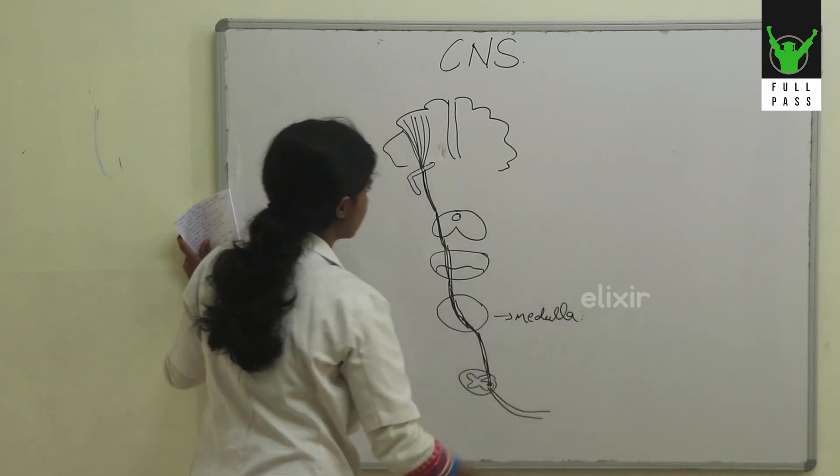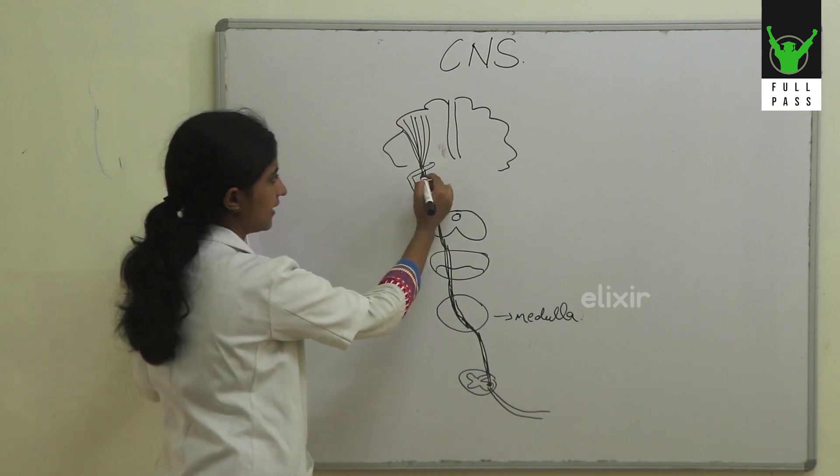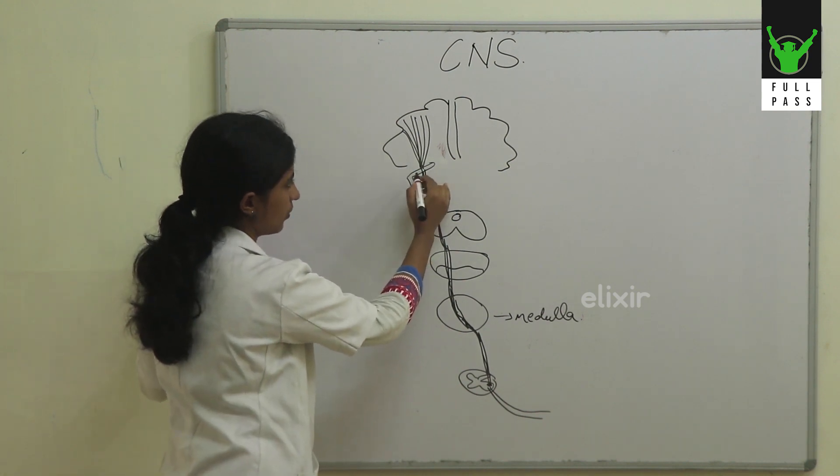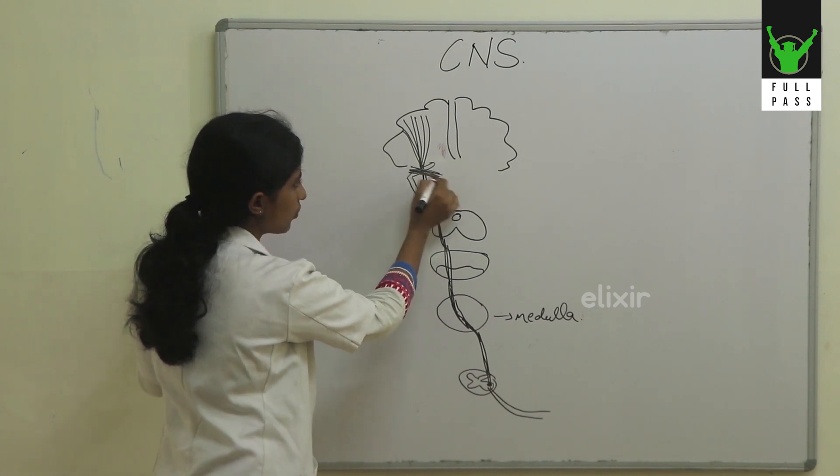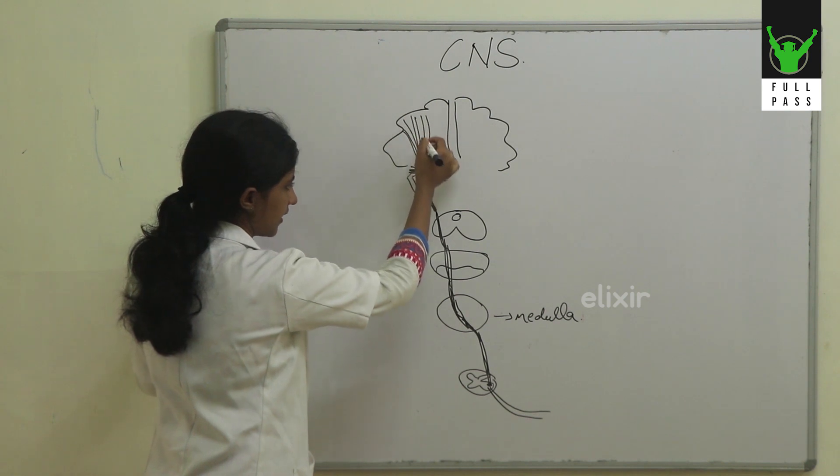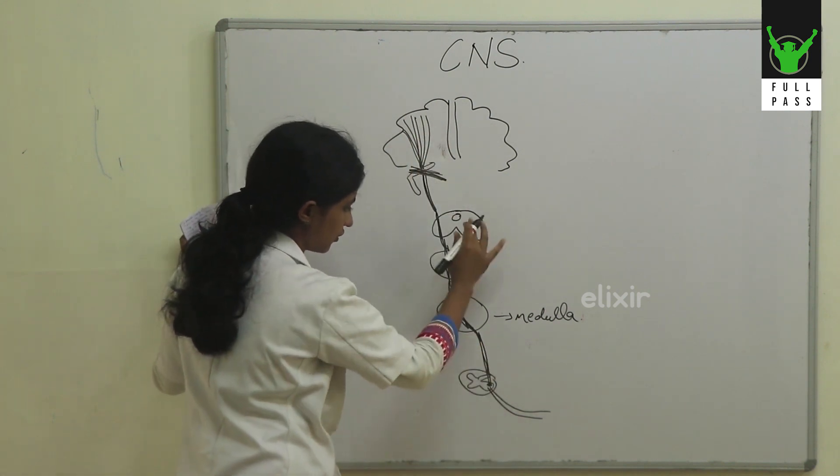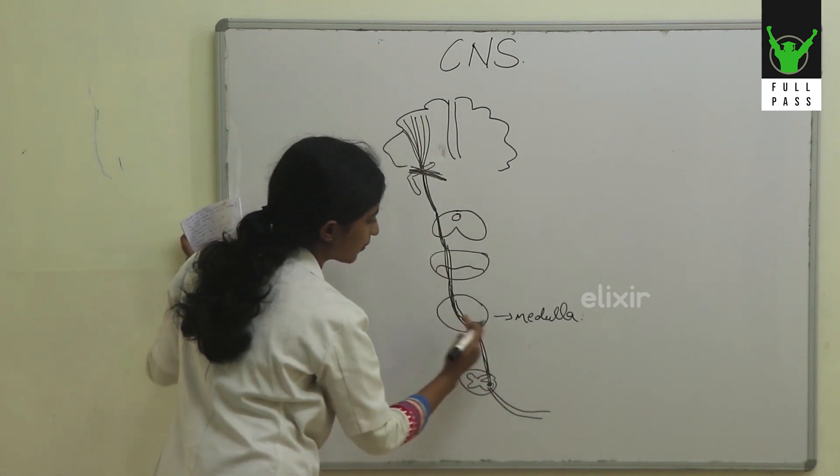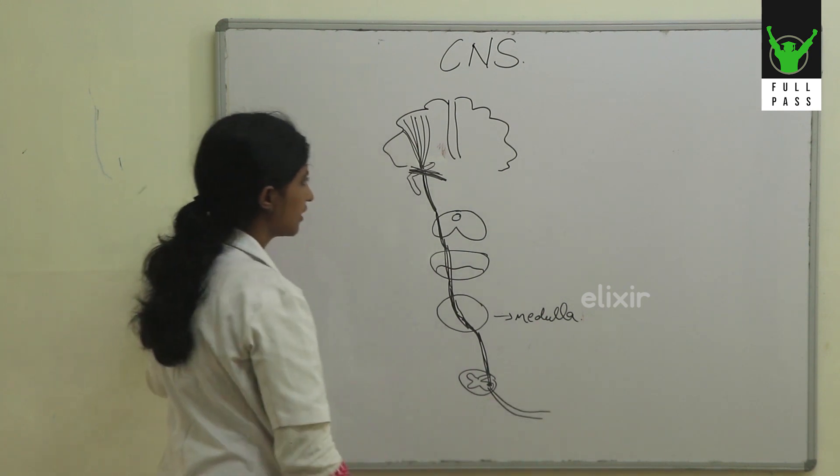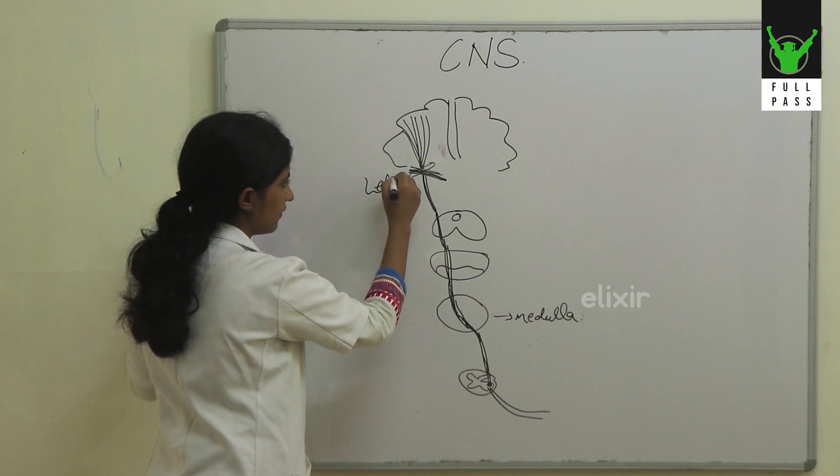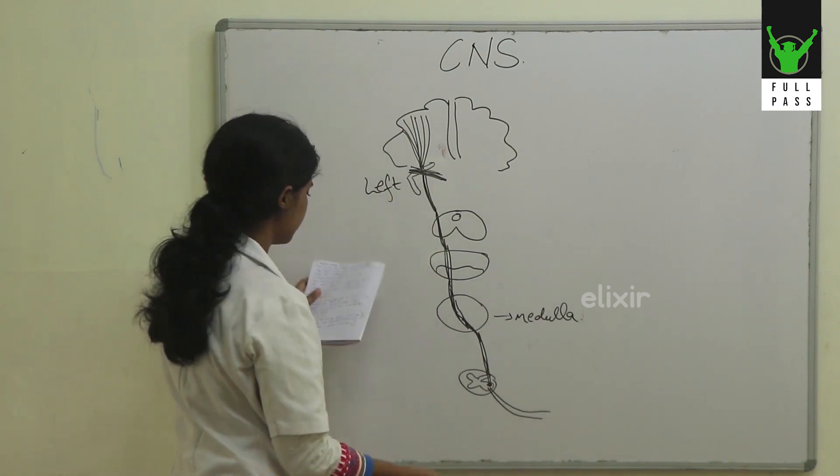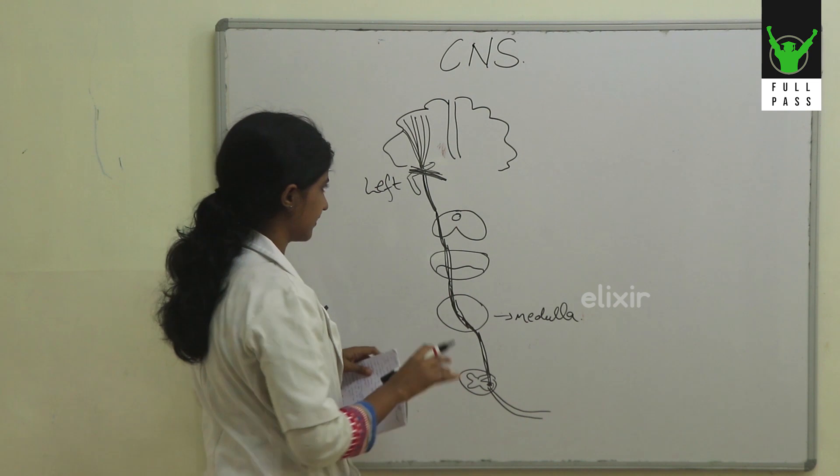When you get an internal capsule lesion, all these fibers will get cut off here, and the entire pathway gets cut off. Then the opposite side will get affected. If there is a lesion in the internal capsule on the left side, we get hemiplegia on the right side.